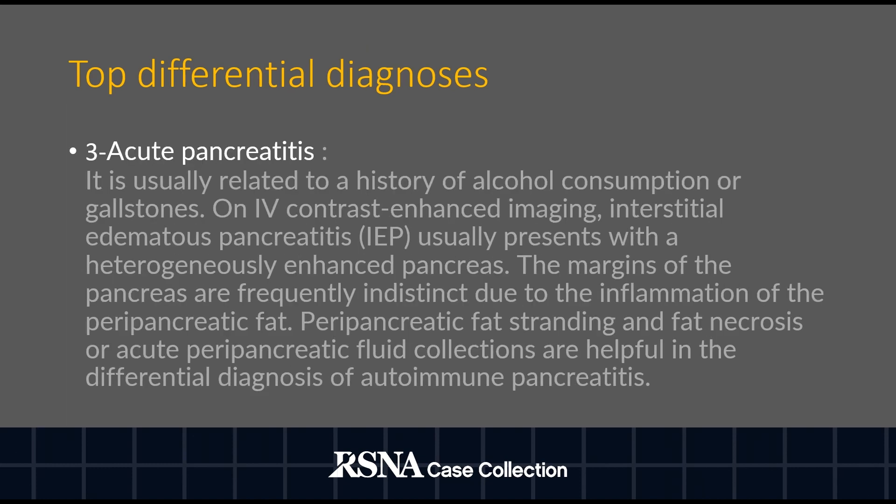Acute pancreatitis is usually related to a history of alcohol consumption or gallstones. On IV contrast-enhanced imaging, interstitial edematous pancreatitis usually presents with a heterogeneously enhanced pancreas. The margins of the pancreas are frequently indistinct due to inflammation of the peripancreatic fat. Peripancreatic fat stranding and fat necrosis or acute peripancreatic fluid collections are helpful in the differential diagnosis of autoimmune pancreatitis.